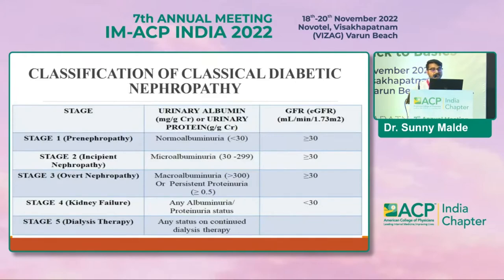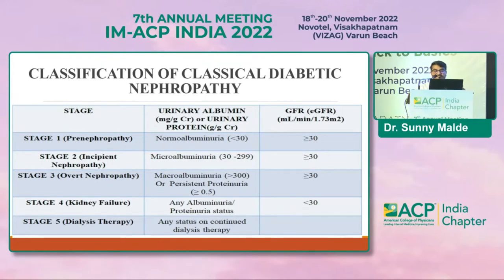This classic table shows the classification of diabetic nephropathy. Stages range from stage 1 to stage 5: stage 1 is pre-nephropathy with UACR showing normal albuminuria less than 30 and eGFR ≥30; stage 2 is incipient nephropathy with microalbuminuria; stage 3 is overt nephropathy with macroalbuminuria or persistent proteinuria; and stage 4 is kidney failure (CKD stage 4) with eGFR less than 30, regardless of albuminuria status.